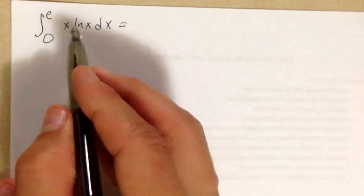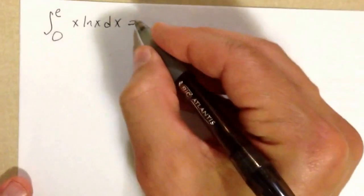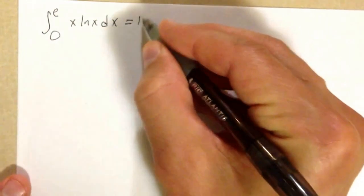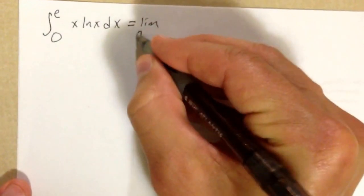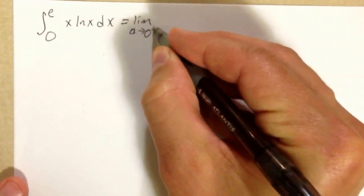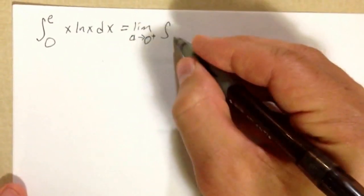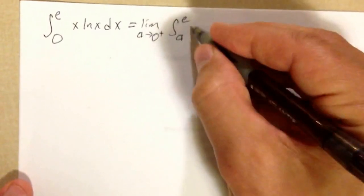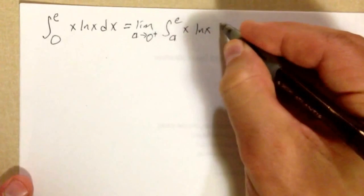Plugging in e doesn't really do anything terrible there. But I'm going to take the limit as a goes to 0 from the positive side of the integral from a to e, x natural log of x dx.